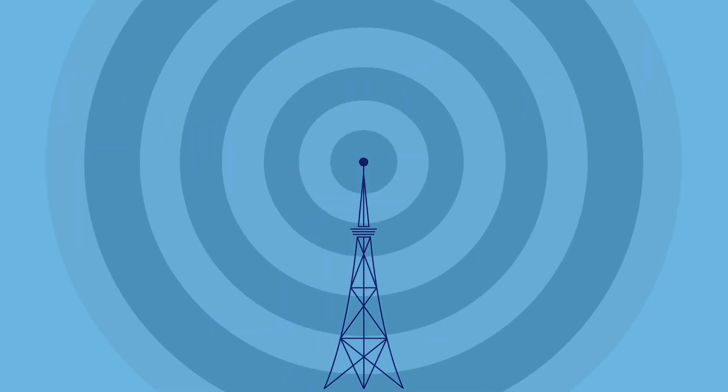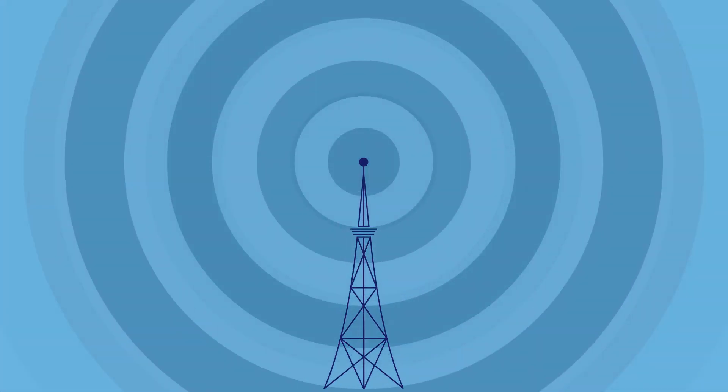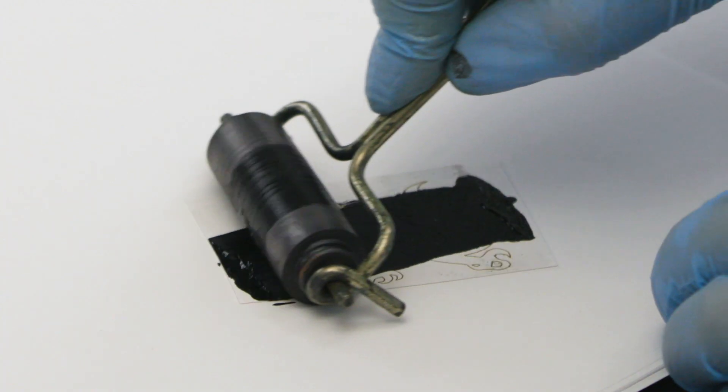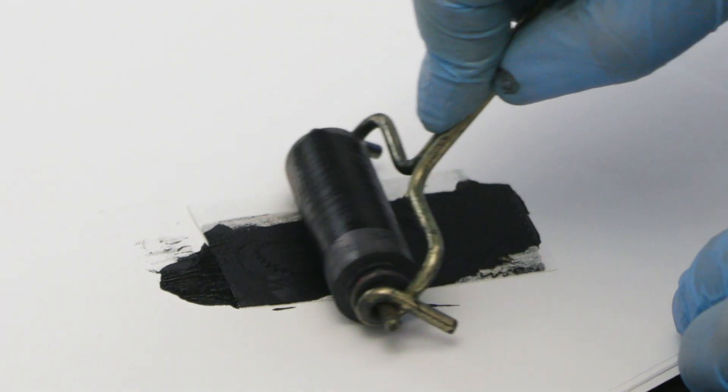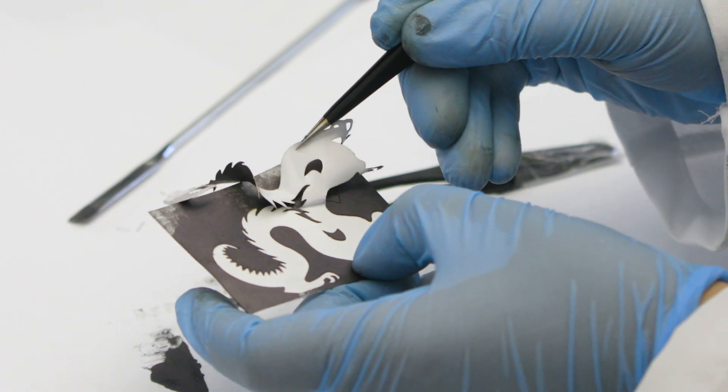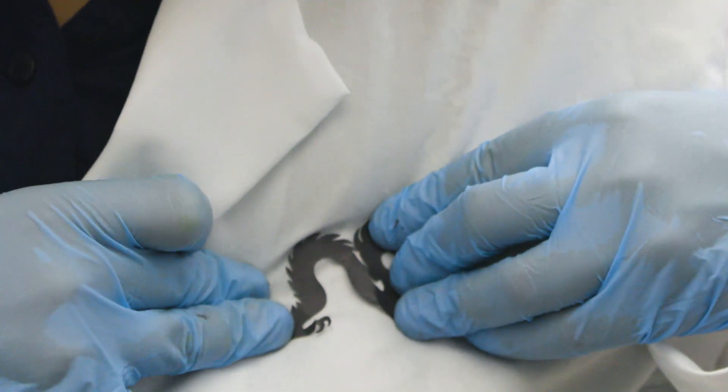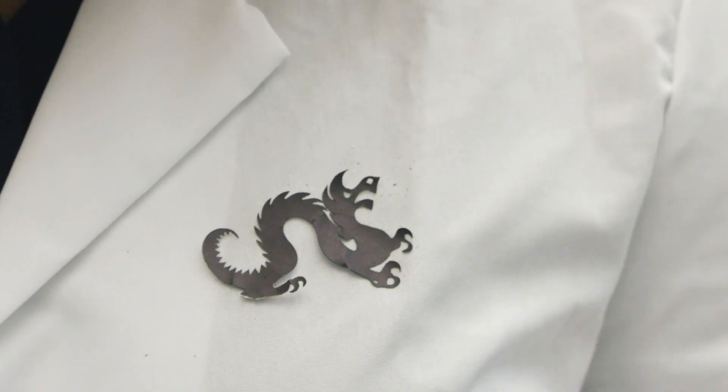MXene antennas function just like the larger metal ones in phones and mobile devices, but they take up virtually no space and can turn almost any object into a fully functional transmitter with just a few sprays.